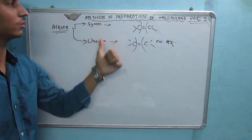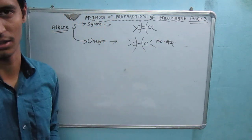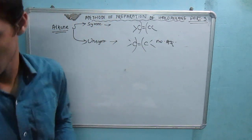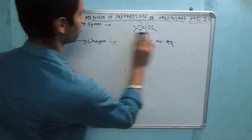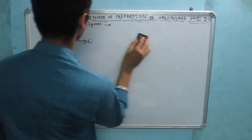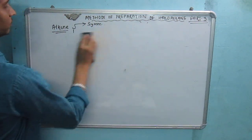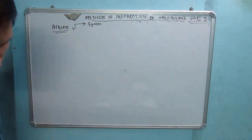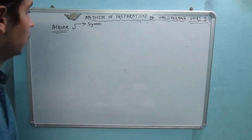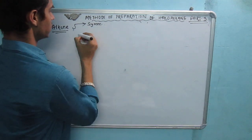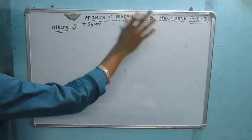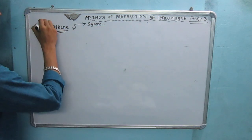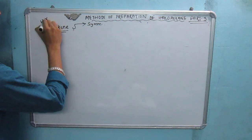I am going to show you symmetrical and unsymmetrical alkenes. For symmetrical alkene, the number of carbons on both sides of the double bond is the same.